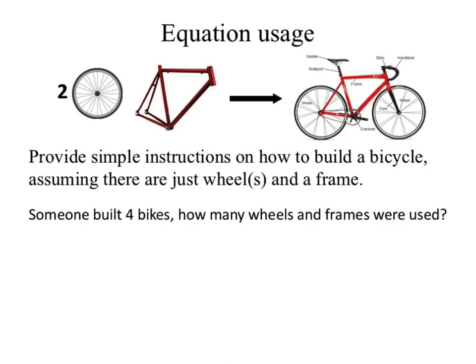Someone built four bicycles — how many wheels and frames were used? Eight wheels and four frames. How did you do that? It organically made sense. That is something pretty much everybody in this room could do in their head. Now, what I want you to do is stop doing this organically in your head. The instant I move it into chemistry terms, you're confused and lost because you don't have the process. So establish a process for how you came up with that answer.